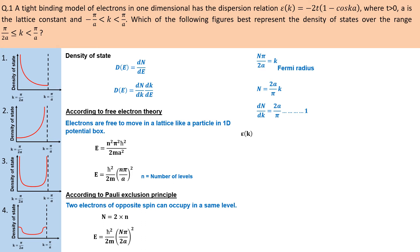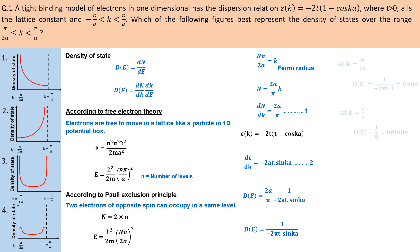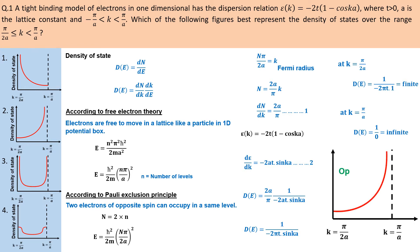Now we find the dE/dk value from the dispersion relation and substitute into the density of states formula. Checking the values over the given range: at k = pi/2a the result is finite, and at k = pi/a the result is infinite, which matches option 2.